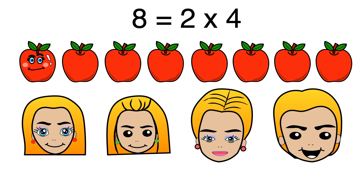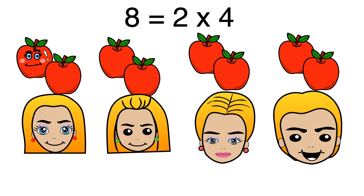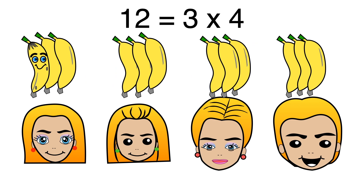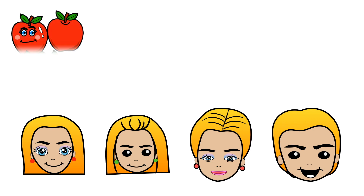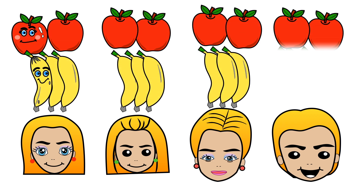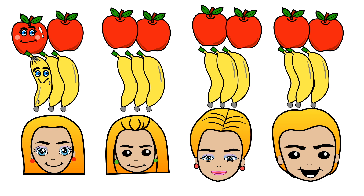Eight equals two times four. Therefore, four people can get two apples equally. Twelve equals three times four. Therefore, four people can get three bananas equally. Judy has distributed eight apples and twelve bananas equally for four people. Judy has two apples and three bananas, the same amount as the other three people.